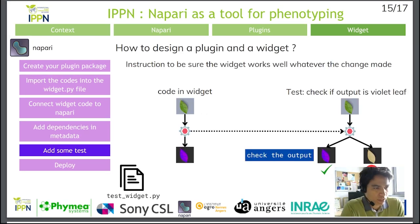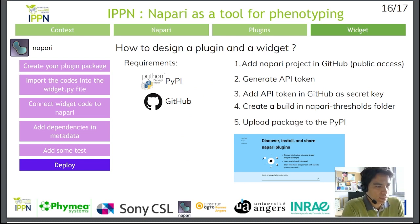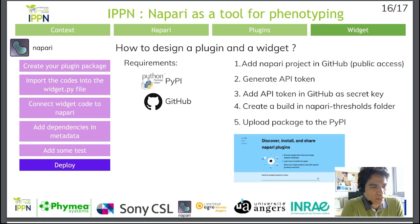Finally, when the code is working and ready to be shared, we define a few tests to ensure that the plugin works properly regardless of any changes made by any user. For example, for a plugin that segments an RGB image into a binary image, we can write a test that guarantees the output is still a binary image. At the end, when everything has been written, you can deploy the plugin to the public. Note that deployment requires a GitHub account and a PyPI account.